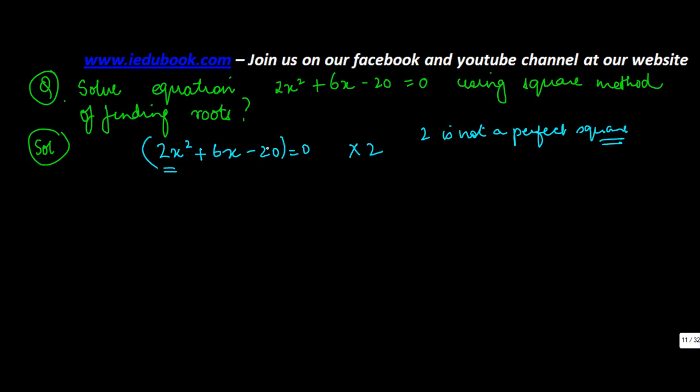Multiplying both sides by 2, I get 4x² + 12x - 40 = 0.